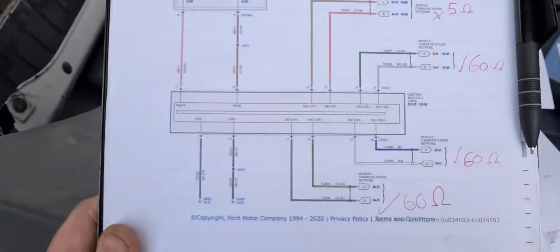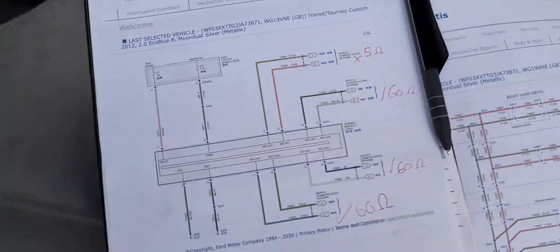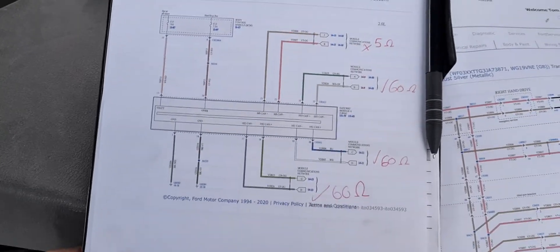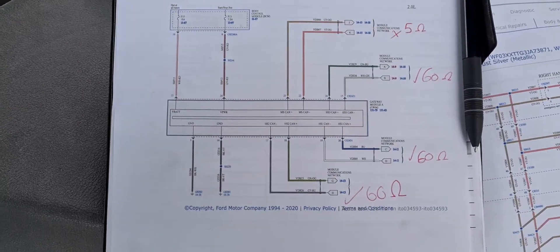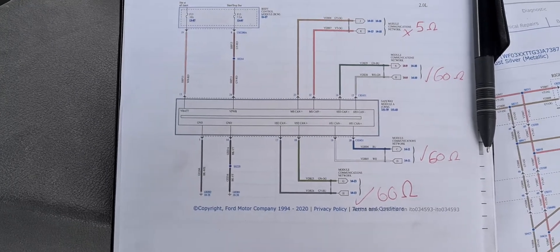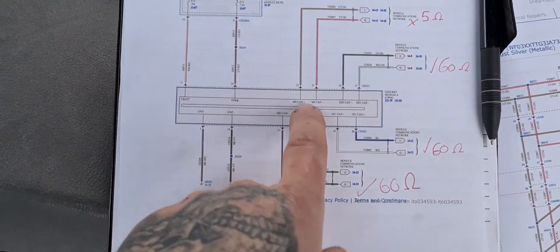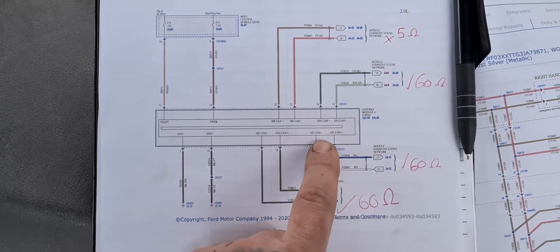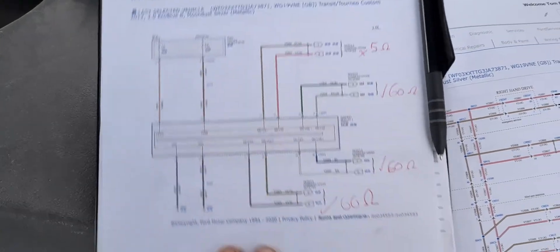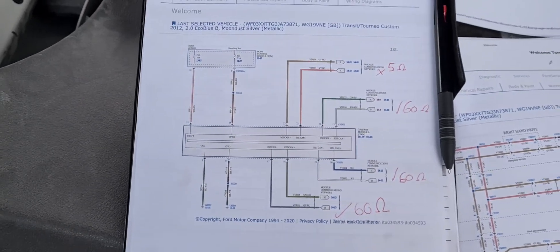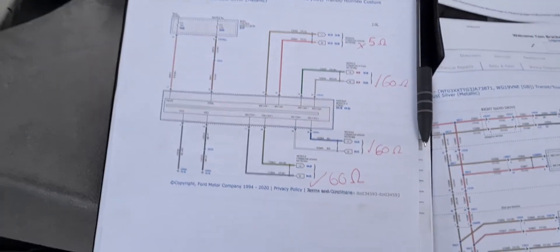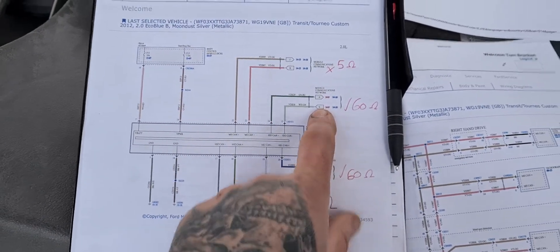We didn't have aftermarket information on this vehicle as it's brand new, so we pulled up the networking map. This has a gateway module after the OBD. We went through it and checked each network — medium speed CAN, high speed CAN 3, high speed CAN 1, high speed CAN 2. We should have 60 ohms of resistance across each network. We've confirmed three are good, and this is our faulty network — we've only got 5 ohms of resistance.